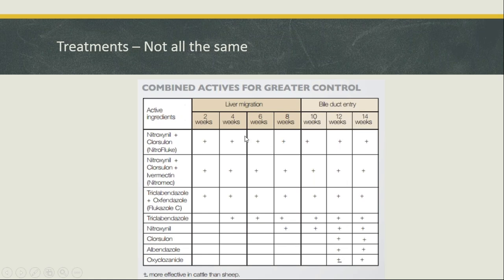If you drench with products that only kill adults but you've got young fluke, those animals still have liver fluke and in a couple of weeks they'll start laying eggs. Triclabendazole has been the mainstay of liver fluke control since the 1980s when it was developed — it gets right down to young stages of fluke. Some older products like closantel are usually combined with ivermectin, albendazole is a broad-spectrum drench with hit-or-miss efficacy against fluke, and oxyclozanide is good for knocking out adults.